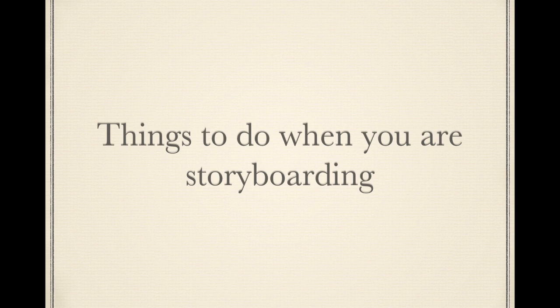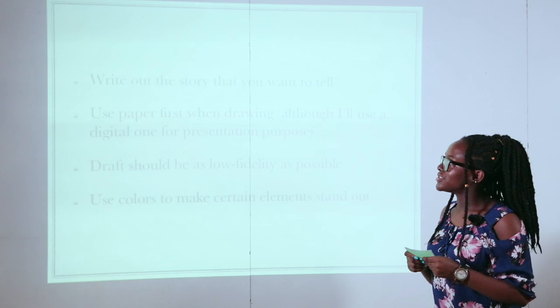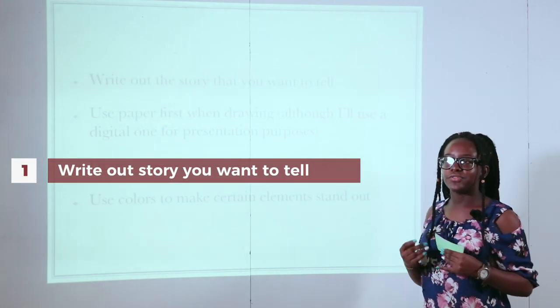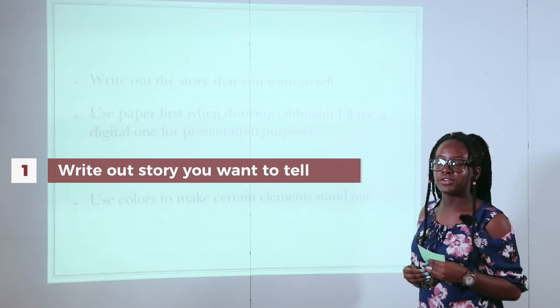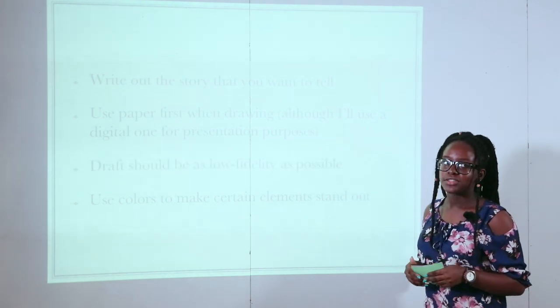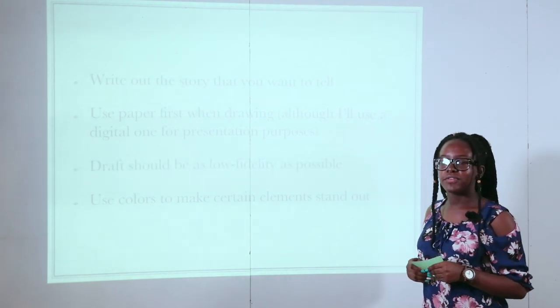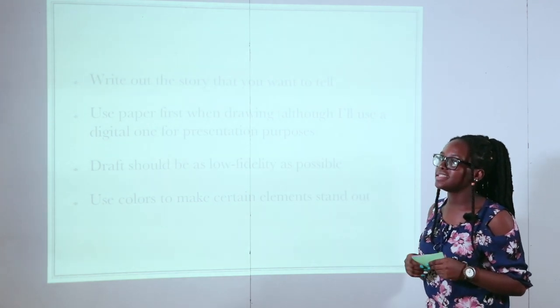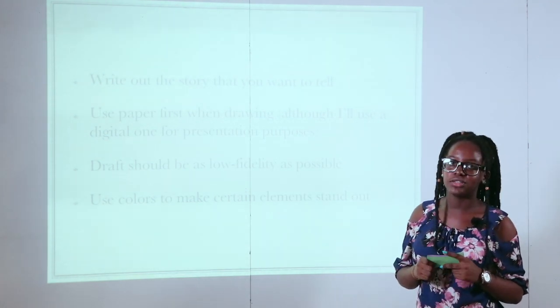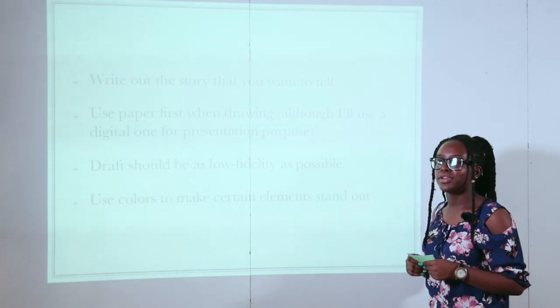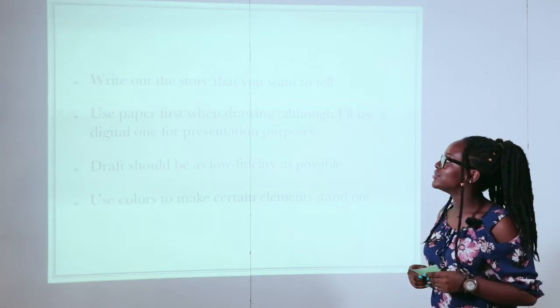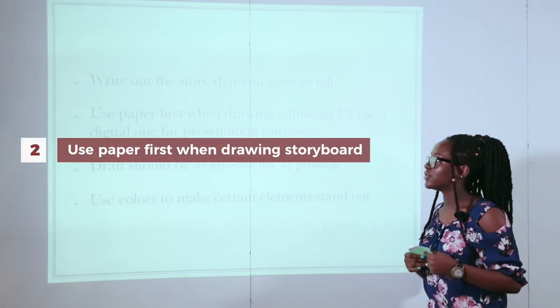We're going to talk about four key things that you can do when you're making your storyboard. The first is to write out the story that you want to tell. Every good movie, every good video, every good advertisement has a script. In the same way, every good storyboard has something that it follows, because it's easier to write out everything you want in your storyboard before you actually create it, so that you don't forget anything.